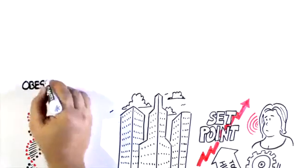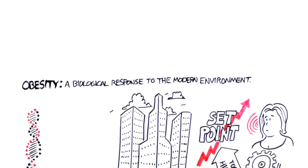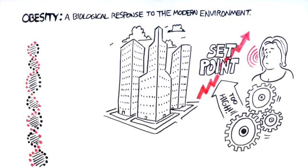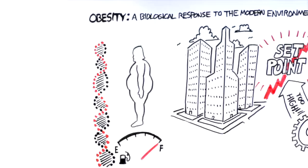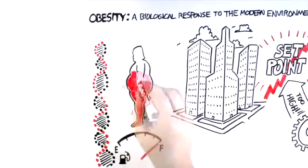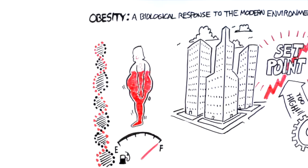So you can think of obesity as a biological response to the modern environment, a disease where the body dysregulates to a body fat set point that is too high. Back to our car analogy, the size of Amanda's gas tank has expanded, so she carries around too much fuel.